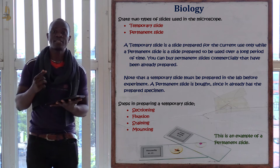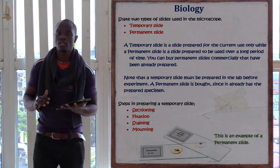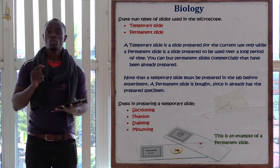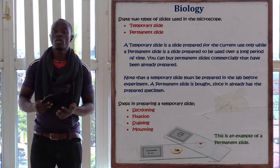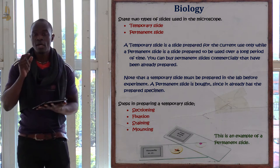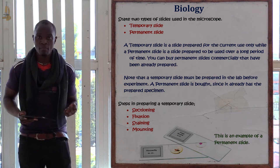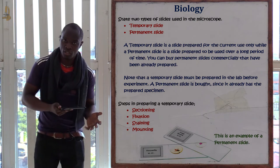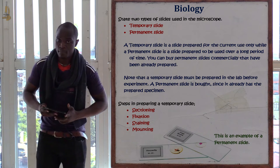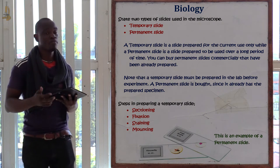In mounting, you then cover using a cover slip, which must also be laid at an angle — not straight — to avoid trapping air bubbles, because air bubbles give a wrong reading under the microscope. So the four steps are: sectioning, fixation, staining using a suitable stain, and mounting. After carrying out all these steps, you have a complete temporary slide for the experiment.